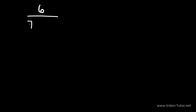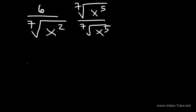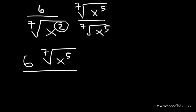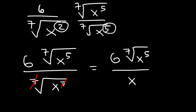This is the last example — go ahead and simplify. We need to get rid of the radical; we have 2x variables in the bottom but we need 7, so we need to add 5 more. Multiply the top and the bottom by the seventh root of x to the fifth power. On top that's 6 times the seventh root of x to the fifth. On the bottom, 2 plus 5 is 7, and the seventh root of x to the seventh is just x. So the final answer is 6 times the seventh root of x to the fifth, over x.